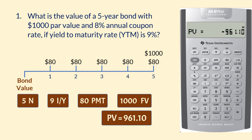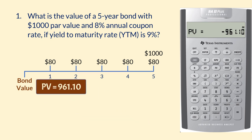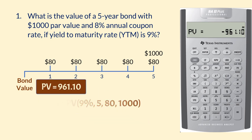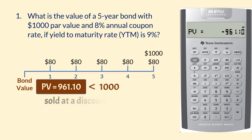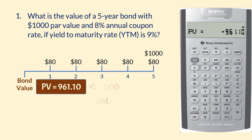We say this 8% coupon bond is priced to yield 9% at 961.10. You can also calculate it in Excel using this input. Since this bond is priced below its face value, we say it is sold at a discount. If the computed present value were greater than $1,000, then it is sold at a premium.